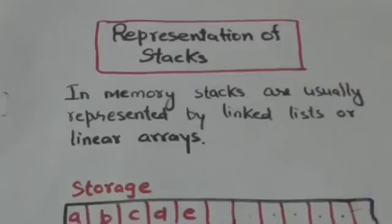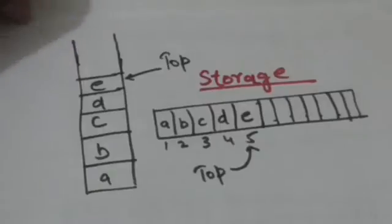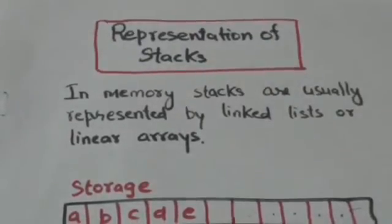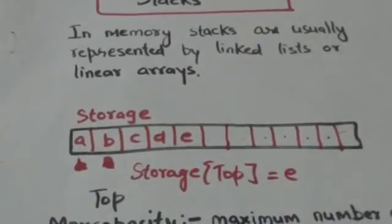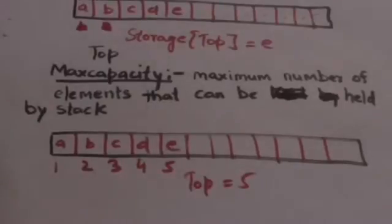Suppose there is a stack storage which is maintained in memory by a linear array called storage. The last element of array storage is considered as the element at the top of the stack. Variable top contains the index of the element in array storage which is the top element of stack storage. There is a variable max_capacity which gives the maximum number of elements that can be held by stack storage.